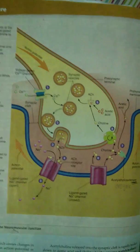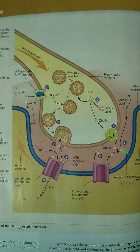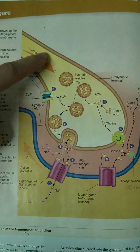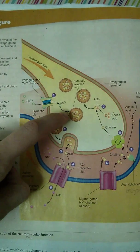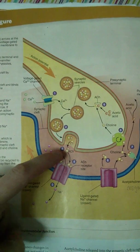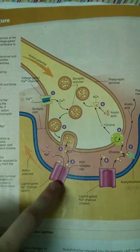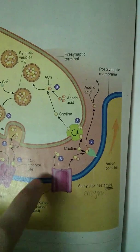So that is what happens during an action potential. And to sum it up really quickly, action potential comes down, stimulates calcium channels. Calcium comes and stimulates vesicles to release acetylcholine into the synapse. Acetylcholine stimulates the sodium channels to open. Sodium rushes in. After that,